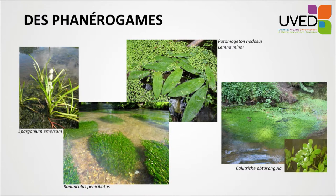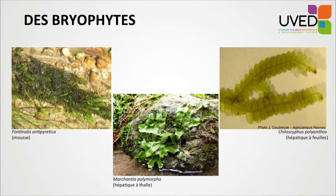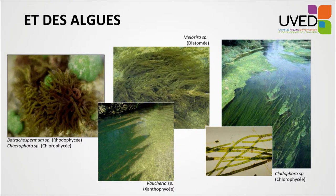Here are a few illustrations of phanerogams: Sparganium emersum with leaves and flowers out of the water; Ranunculus penicillatus in the water; Potamogeton nodosus floating on the surface. Bryophytes such as the very common Fontinalis moss, hepatics with their leaves, and algae which may form colonies and carpets on the bottom of the waterway.